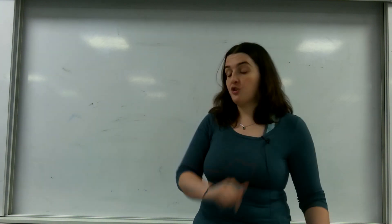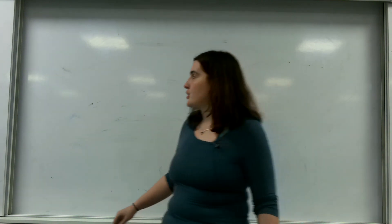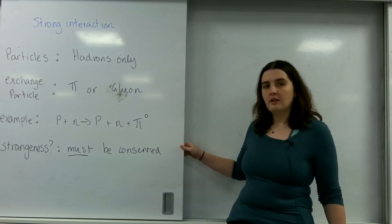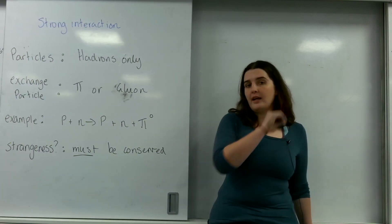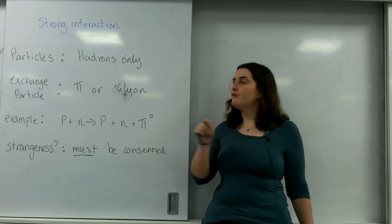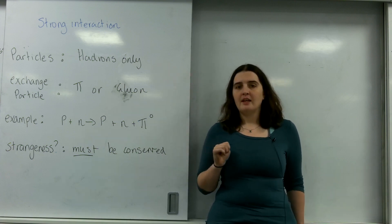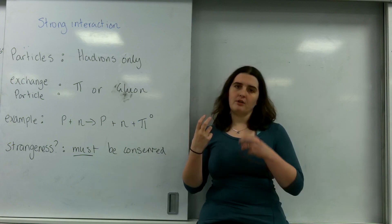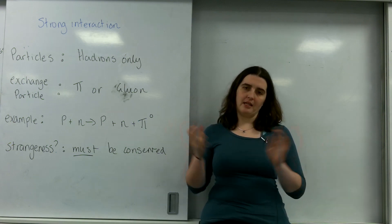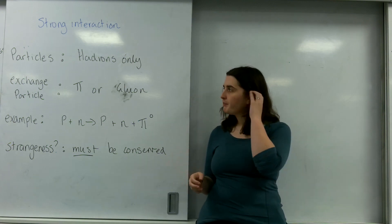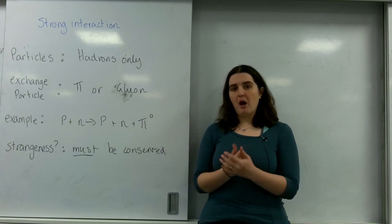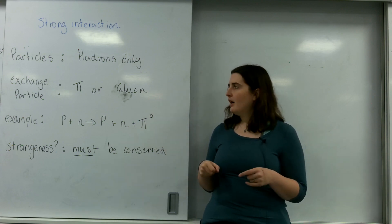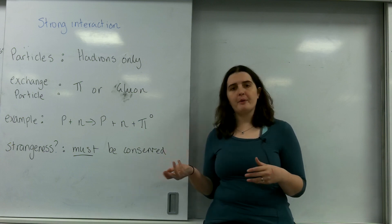Today I'm going to talk about the strong interaction. The strong interaction only involves hadrons, and importantly it's all about hadrons interacting. I take one hadron and another hadron and they interact and something happens. The exchange particle — the particle that appears for a bit and takes some energy away — is either the pion or the gluon.